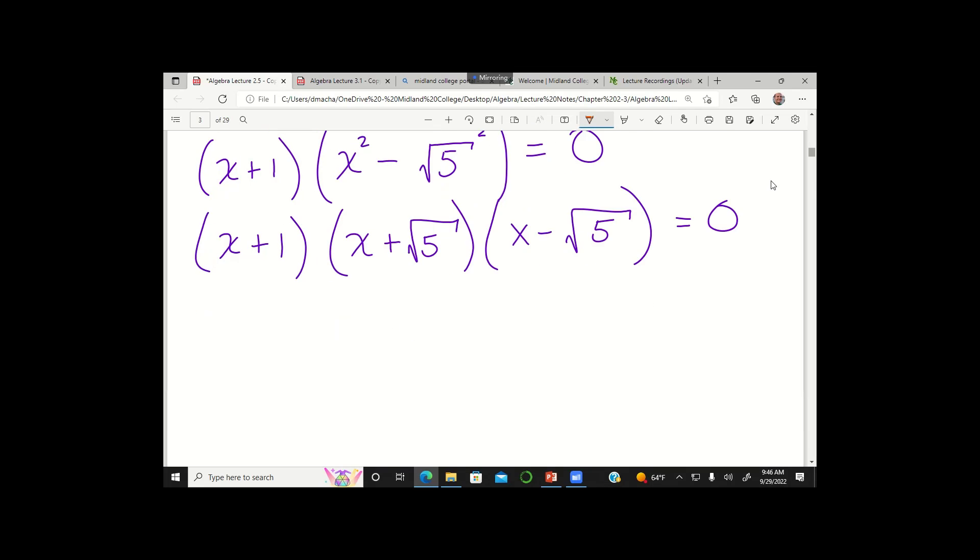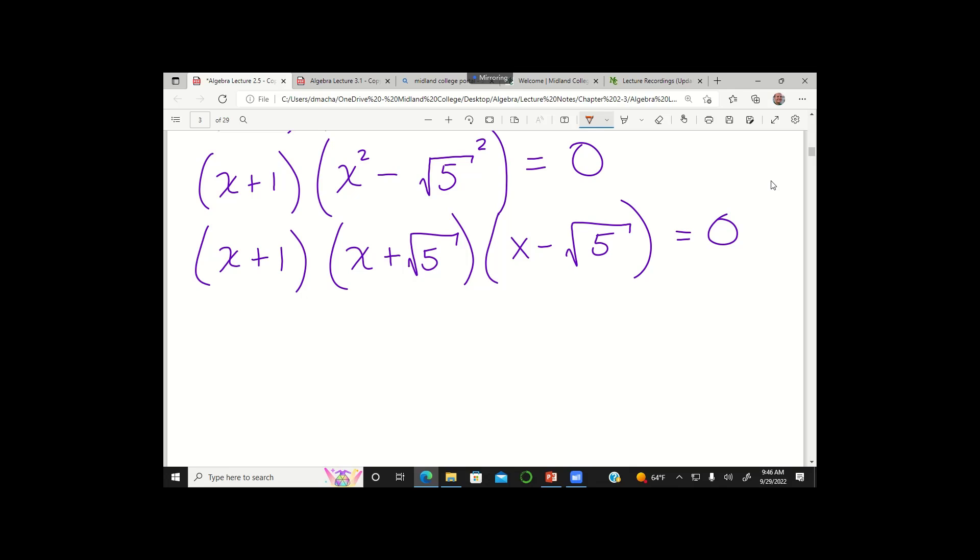And here you can tell that I'm going to end up with three solutions now. One solution is going to come from setting that equal to 0, and then my second solution is going to come from setting this equal to 0, and then my third solution I'm going to get if I set this third factor equal to 0. And so my solutions are going to be x equals negative 1, negative square root 5, and positive square root 5. So three solutions because I had a cubic equation.